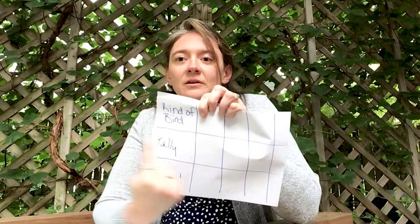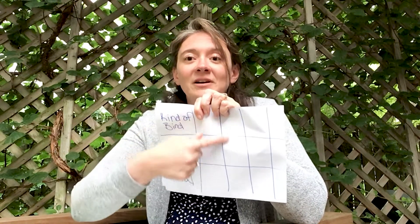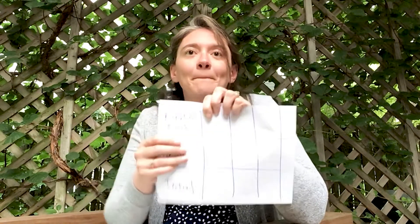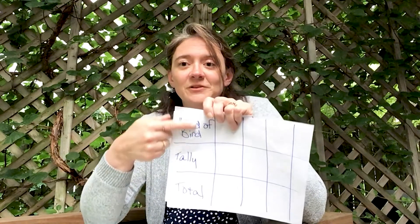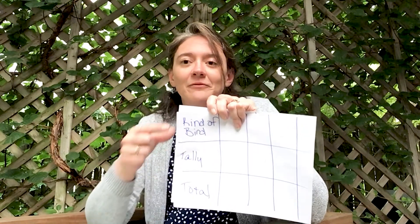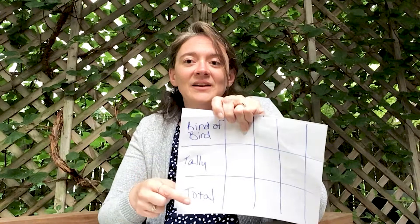Next, set up a data table. Make a grid with three rows — one, two, three — and at least five columns going up and down. Now, from top to bottom in your first column, write 'kind of bird,' then 'tally,' then 'total.'